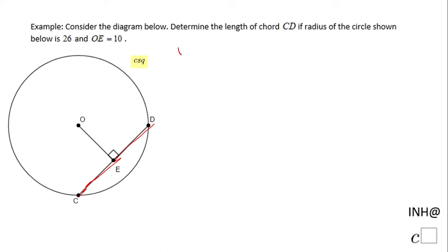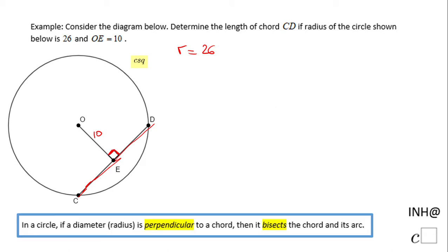Segment OE is perpendicular to this chord. We have a theorem that says: in a circle, if a diameter, radius, or part of a radius is perpendicular to a chord, then it bisects the chord and its arc.